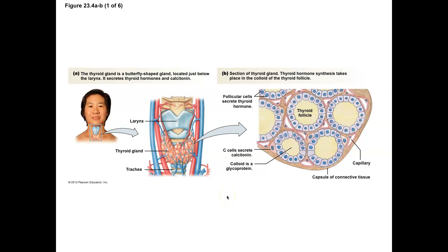Hello everyone, Mr. Linder here. Let's talk about the thyroid gland. The thyroid gland is a gland located just inferior to the larynx and is the largest pure endocrine gland of the body. What that means is that it's a gland that strictly produces endocrine hormones.